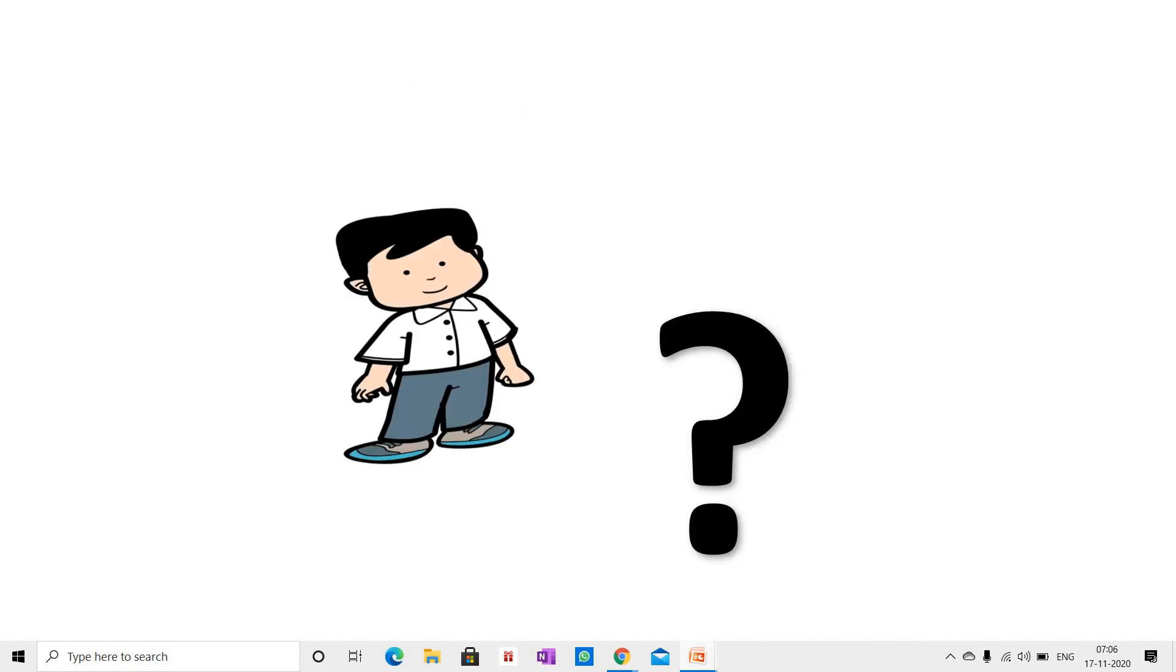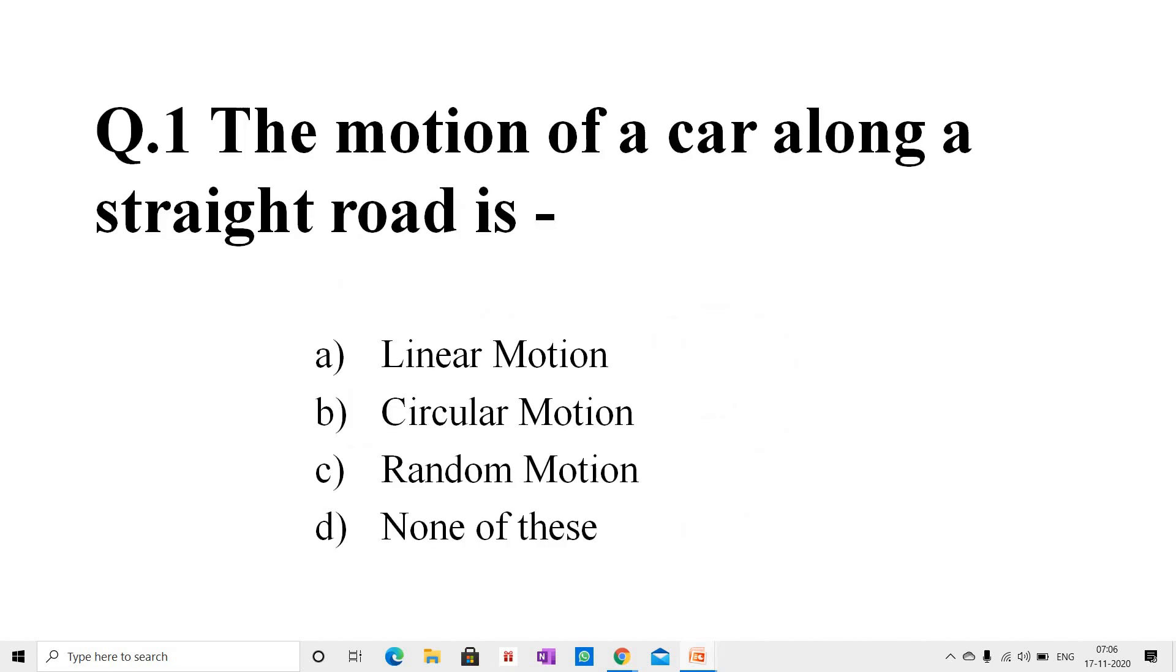Students, now let us revise what we have learned today by solving some questions. Question number 1, the motion of a car along a straight road is. Option A, linear motion. Option B, circular motion. Option C, random motion. Option D, none of these. And the correct answer is Option A, linear motion.